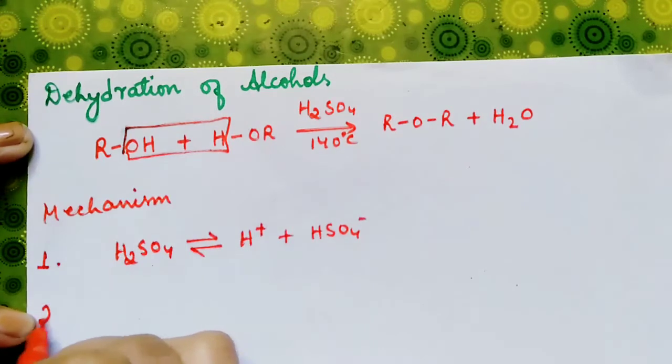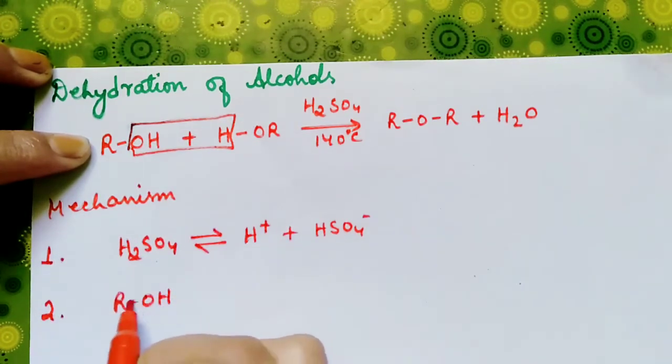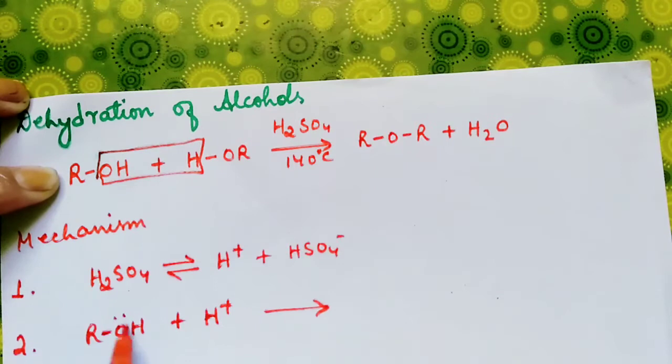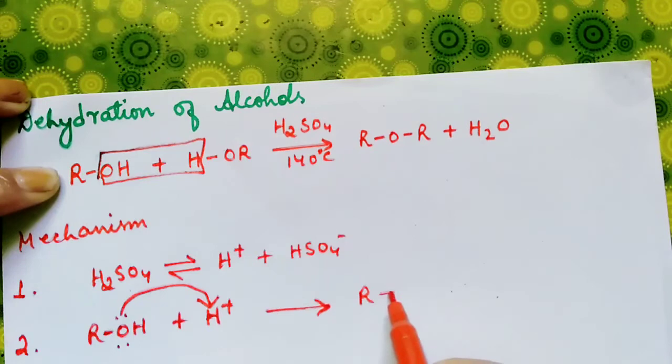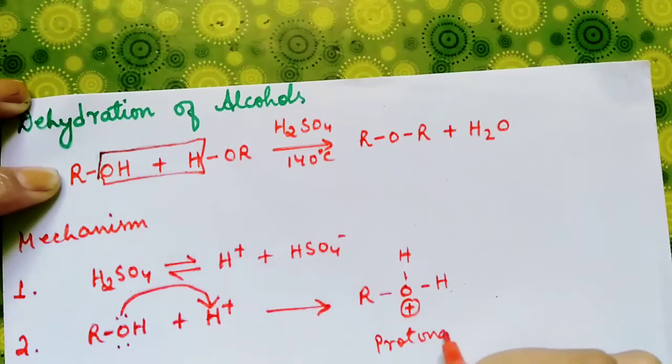Step two: one of the alcohol molecules reacts with this proton. It picks up a proton in this way. So we have R-O-H-H plus. This is your protonated alcohol.